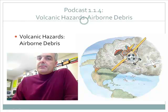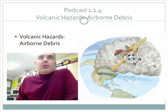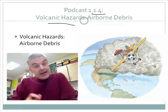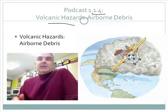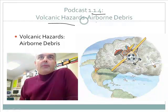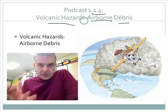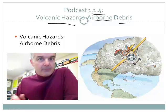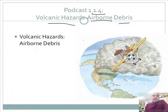Good morning folks, this is Mr. Bergman, and today I want to do podcast 1.1.4. We're going to be learning about volcanic hazards — there are hazards to a volcano, yes you did know that. Today we're going to talk about airborne debris, so when a volcano erupts, things get thrown into the air. The question is: what gets thrown into the air?